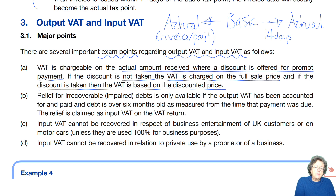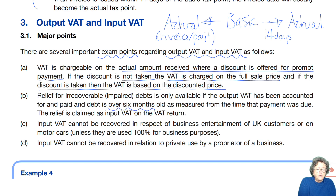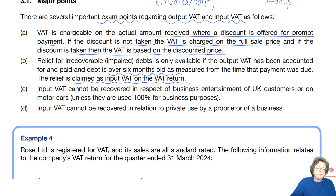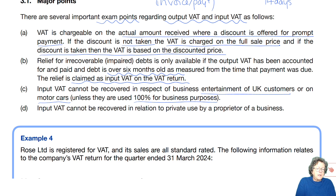Relief for impaired debts is only available if the VAT has been accounted for, paid, and the debt must be over six months old. You reclaim that as input VAT on the VAT return. Input VAT cannot be recovered by a business in respect of entertaining UK clients, or on cars unless they're 100% for business purposes. And input VAT cannot be recovered on any private use of the business.